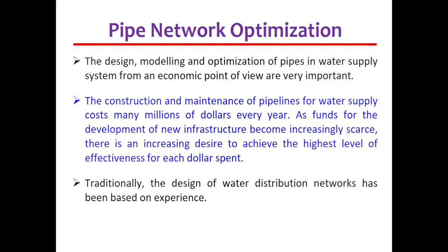Also, the design, modeling, and optimization of pipes in the water supply system, from an economic point of view, is very crucial. When you are doing optimal design, you are making the best selection of pipes so that you are minimizing the cost. The construction and maintenance of pipeline for water supply costs many millions of dollars every year, whether constructing new projects or maintaining existing water supply schemes.